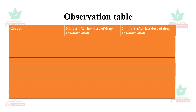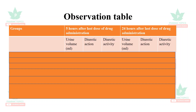We collect the volume of urine for the test divided by the volume of urine collected for the vehicle. This is the Lipschitz test formula. Urine volume is measured in mL. This gives us the diuretic action and diuretic activity values, which we then report.